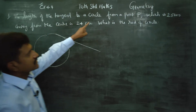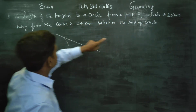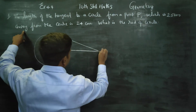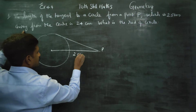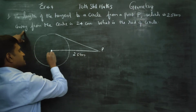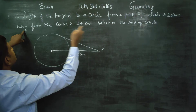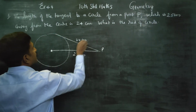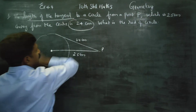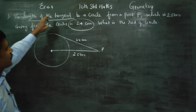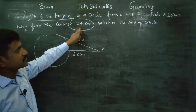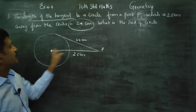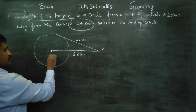The length of the tangent to a circle from a point P which is 25 centimetres away from the centre is 24 centimetres. So the length of the tangent is 24 centimetres, and point P is 25 centimetres away from the centre.